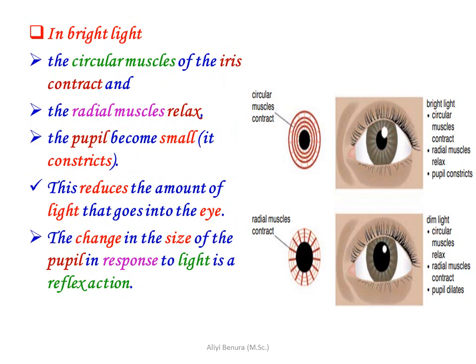In bright light, the circular muscles of the iris contract and the radial muscles relax, so the pupil becomes small. This reduces the amount of light that goes into the eye. The change in size of the pupil in response to light is a reflex action — it is an involuntary action.